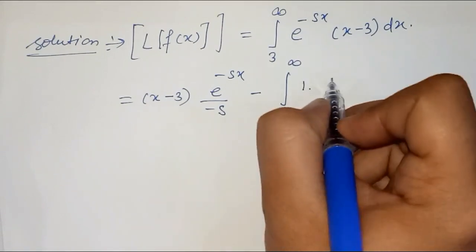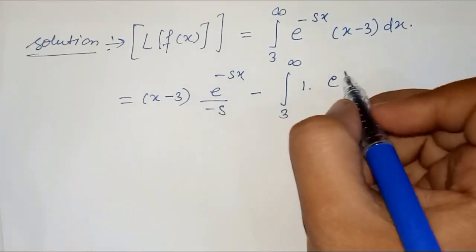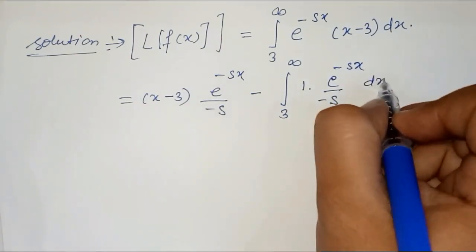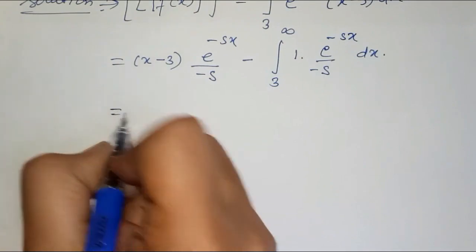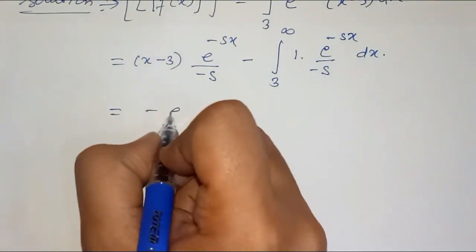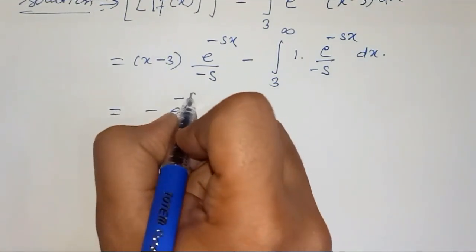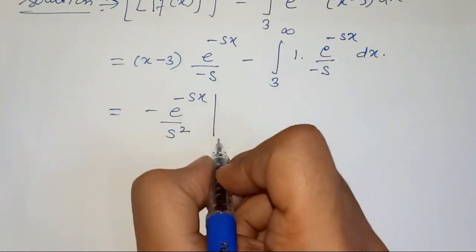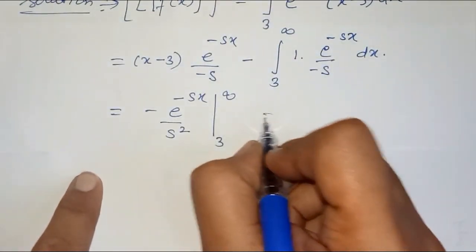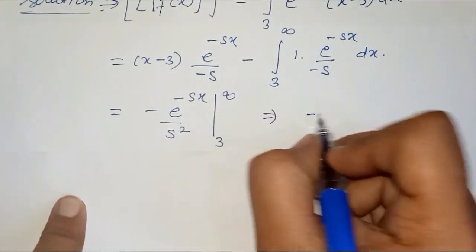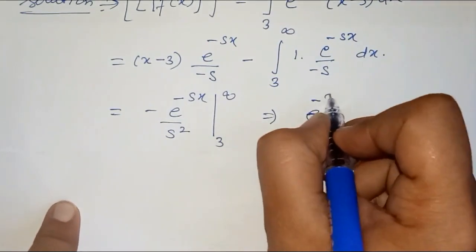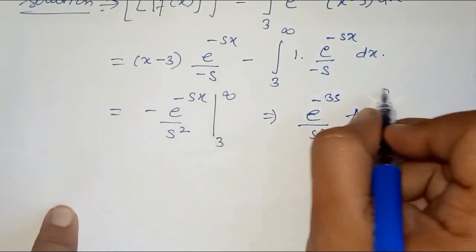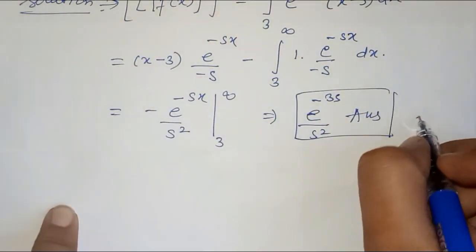...d/dx of (x-3) times e^(-sx) upon s dx. After arranging this equation, we get -e^(-3s) upon s squared, evaluated from 3 to infinity. So the answer is -e^(-3s)/s². The answer is D.